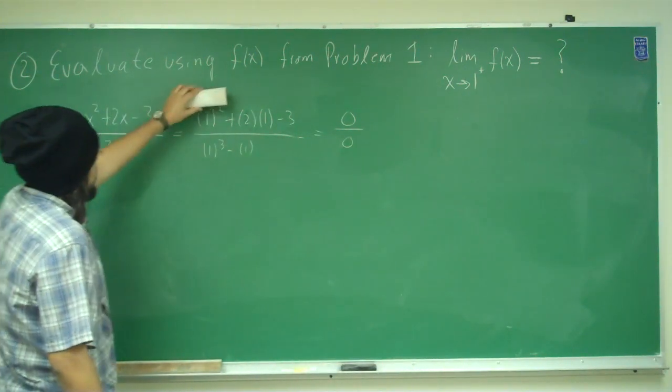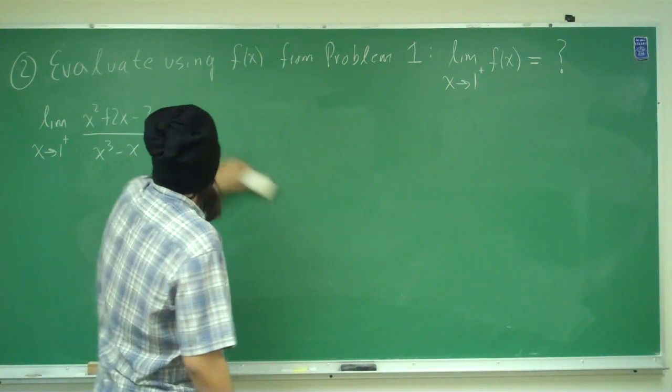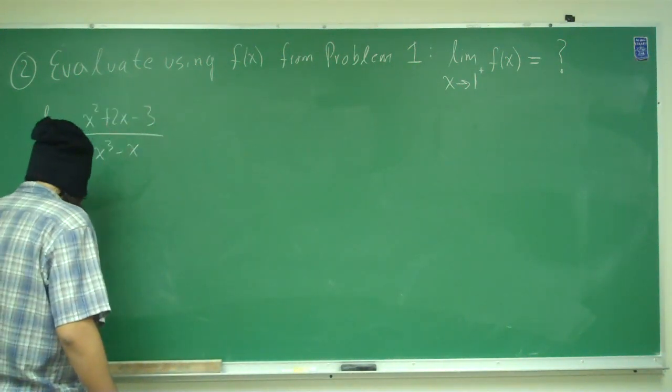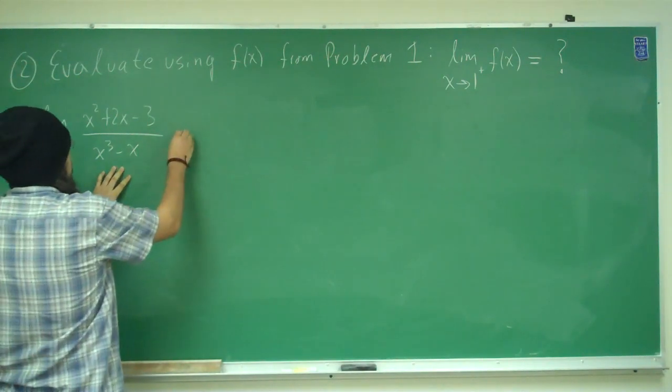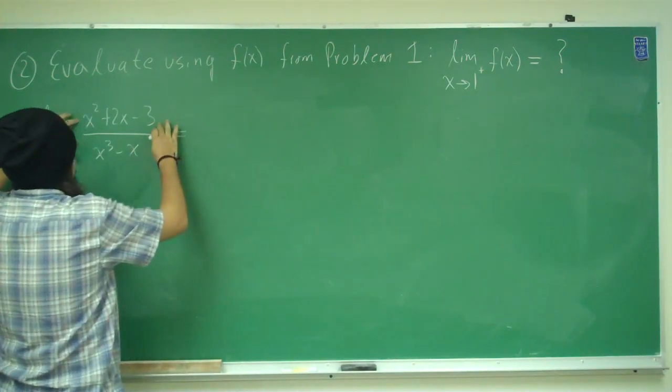So what we have to do is go ahead, alright, so that means we've got to do some more work. Alright, so recall what we did for problem 1, we went ahead and factored this out. So let's go ahead and do that again. So we can factor this expression here.